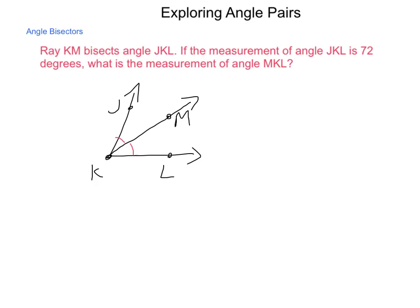Now the measure of the entire angle is 72 degrees. So what would be the measure of this angle right here if the entire thing is 72? Well, because it's an angle bisector, the measurement of angle MKL is going to be one-half the measurement of angle JKL. The measurement of JKL is 72 degrees. So half of that is 36 degrees. And we get the measurement of angle MKL.